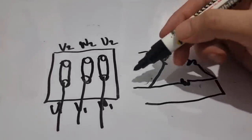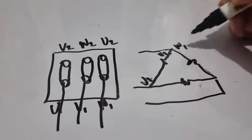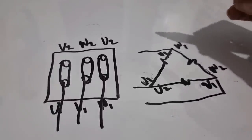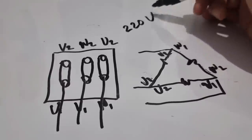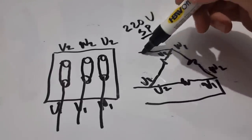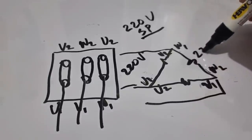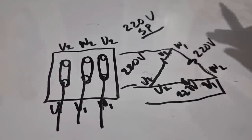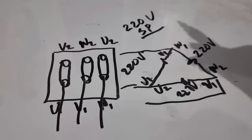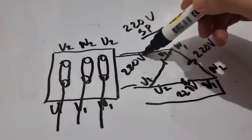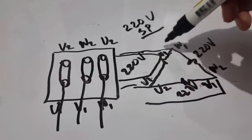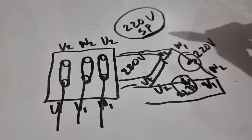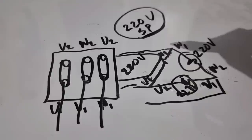So this will be your U1, U2, then W1, W2, and then V1 and V2. This is the delta connection. As you can see, if you have 220 volts three-phase, then this winding is 220 volts, this winding is 220 volts, and this winding is 220 volts — going directly to each winding of the motor. If 220 volts passes onto each winding, you have three-phase 220, and this is the current setup on this motor.